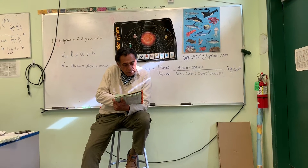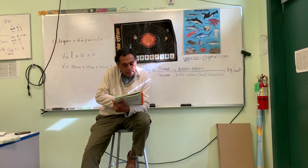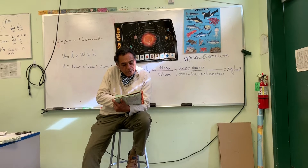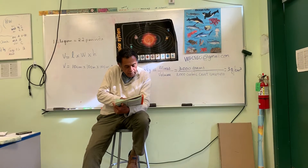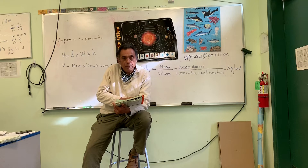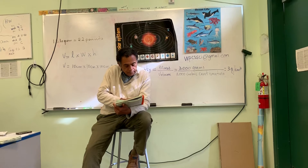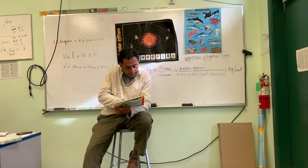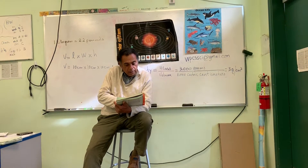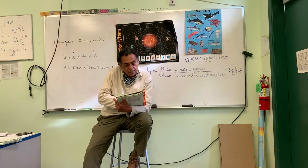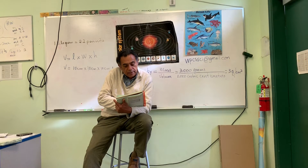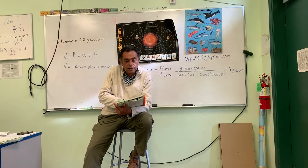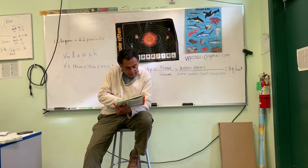Number three: name the upper lip of an insect. They call it the labrum. Insects have an upper and a lower lip. And then number four: what is the term for an insect's side-to-side jaw? It is the mandibles.